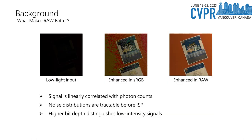As we delve deeper into our methodology, it is important to understand why we choose to work with raw data for low-light image enhancement. Raw data offers three distinct advantages over RGB data in this context. First, unlike RGB data, the signal in raw data is linearly correlated with the photon counts. This linear correlation simplifies the enhancement process as it provides a more direct and accurate representation of the scene's illumination.